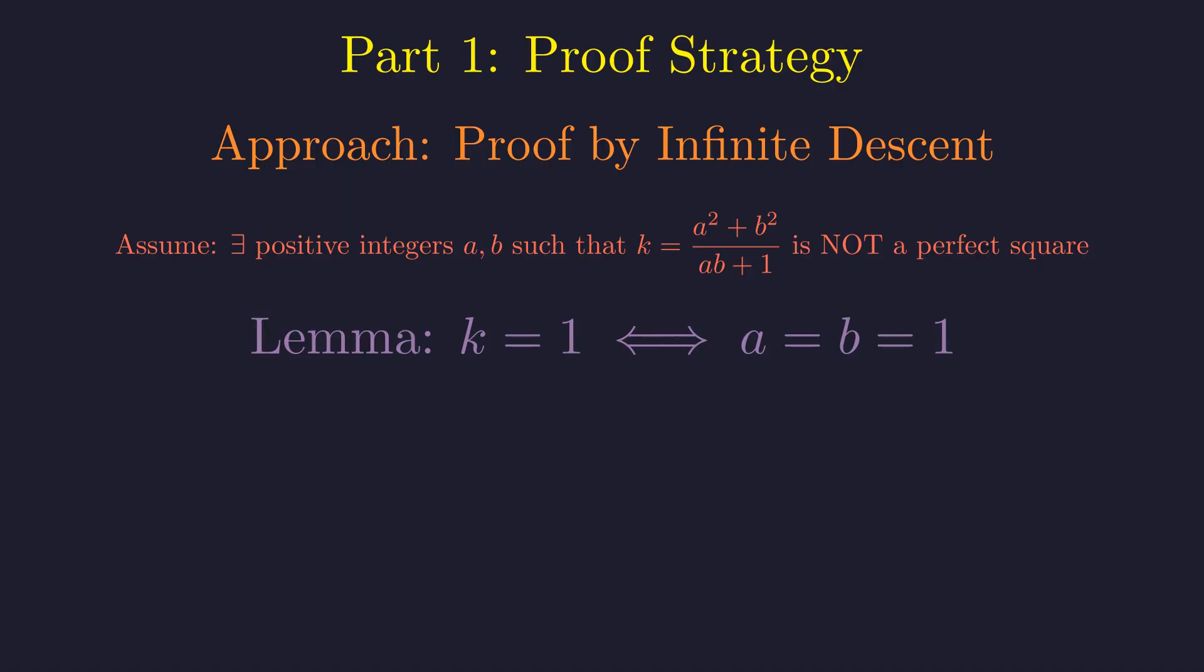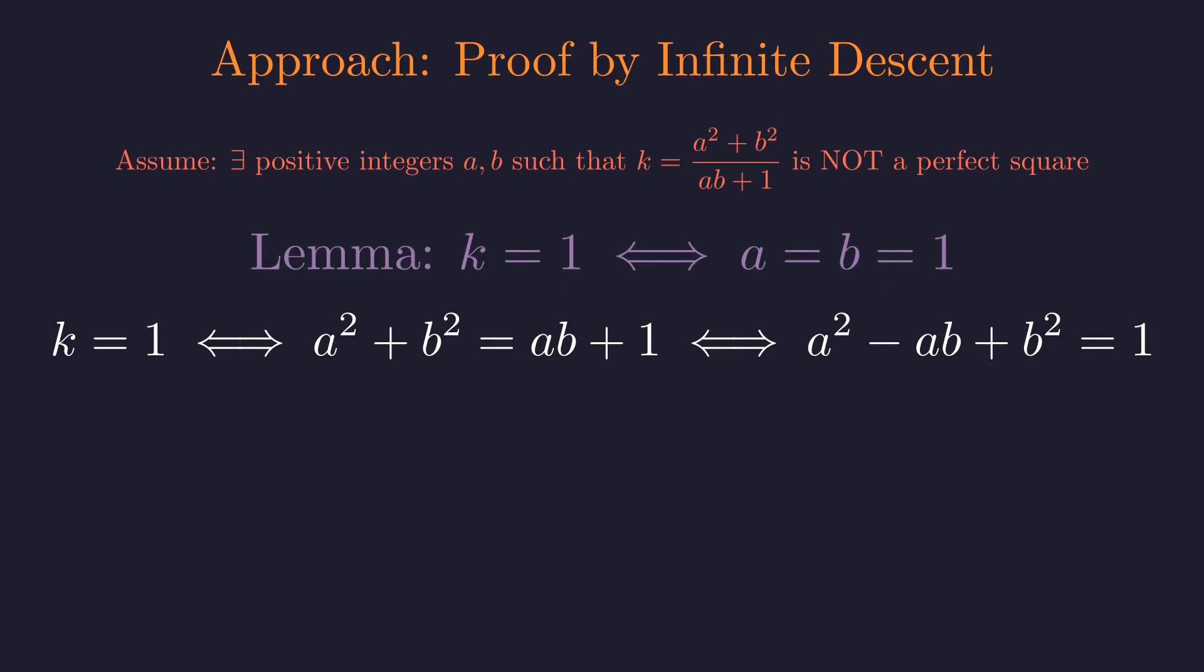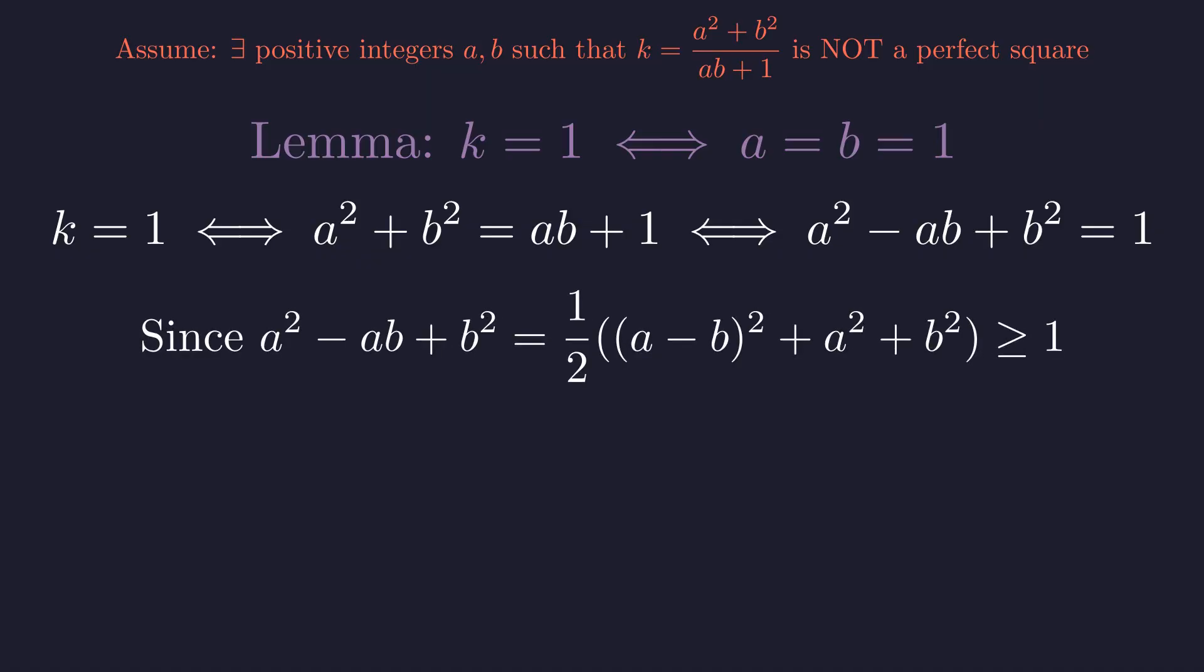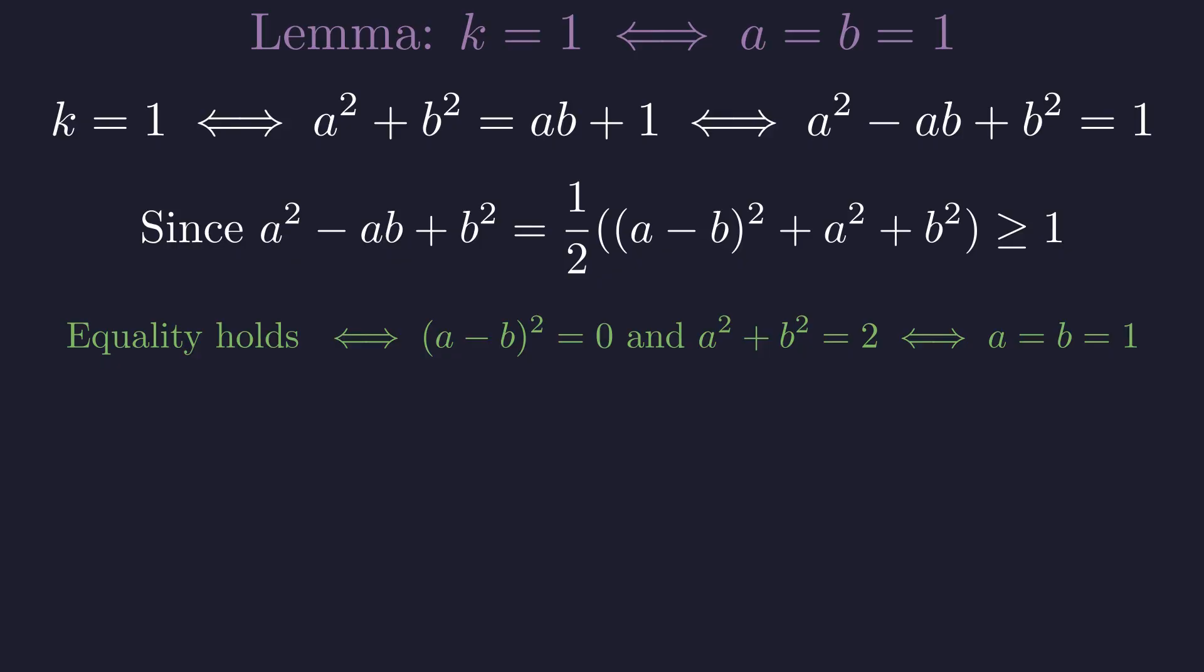Let me prove a useful lemma. k equals 1 if and only if a equals b equals 1. k equals 1 if and only if a squared plus b squared equals ab plus 1, which rearranges to a squared minus ab plus b squared equals 1. We can rewrite this as half times the sum of (a minus b) squared plus a squared plus b squared, which is at least 1 for positive integers. Equality holds if and only if a equals b and their squares sum to 2, which forces a equals b equals 1.